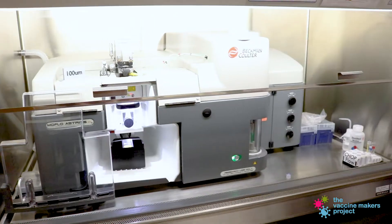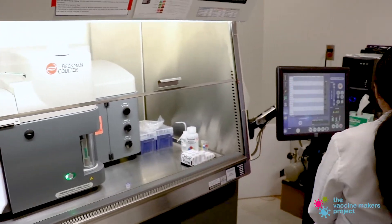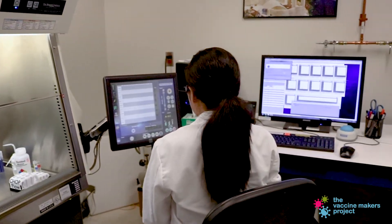In flow cytometry, we use different types of instrumentation to measure different groups of cells and to separate and collect the cells of interest from the rest of the sample.